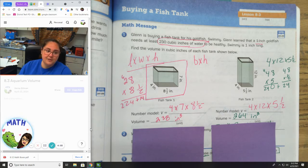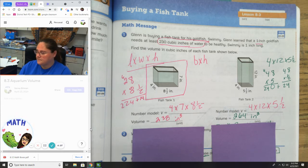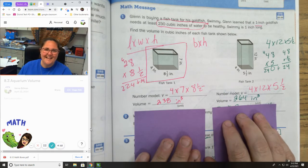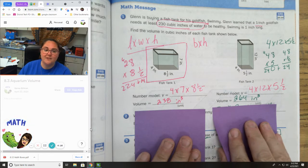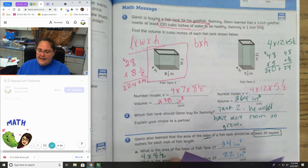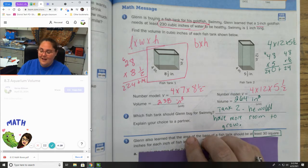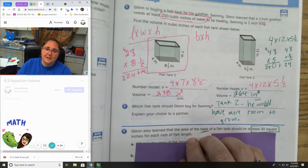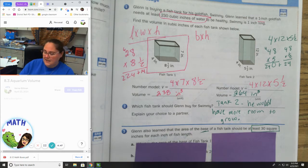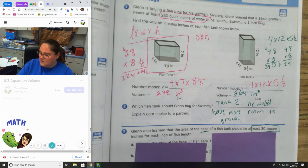Which fish tank should Glenn buy for Swimming? And why? Which one? This is a two part question because you need to be able to tell me which one and why. Knowing that I want my fish to be healthy. If I know that he needs at least 230, and this is 238, it would work, but he couldn't get much bigger. Right? So in order for him to be happier, I think he would be better in a larger tank. So me personally, I would say he should buy tank 2.